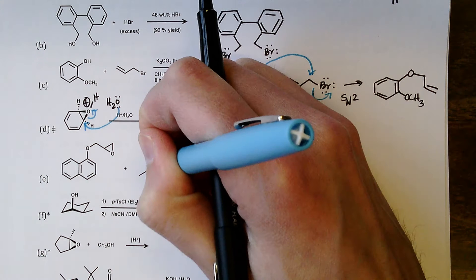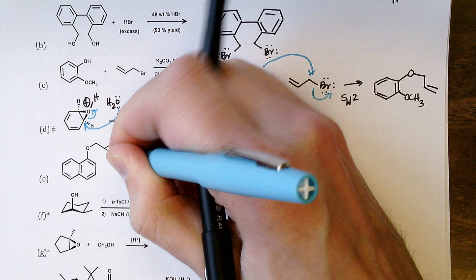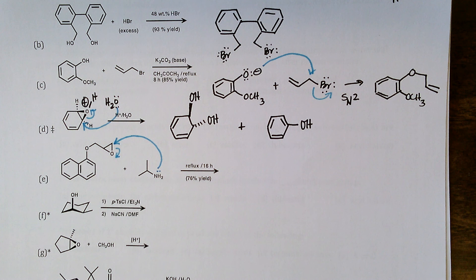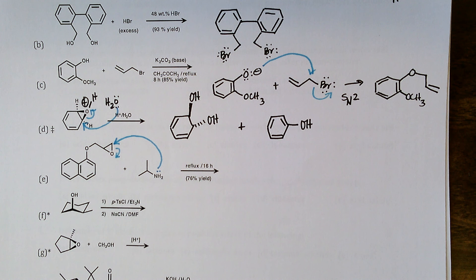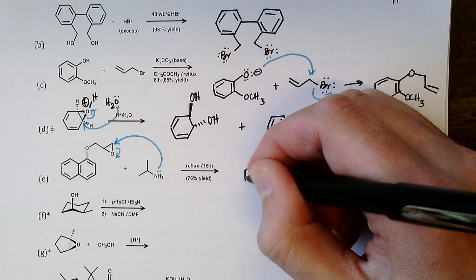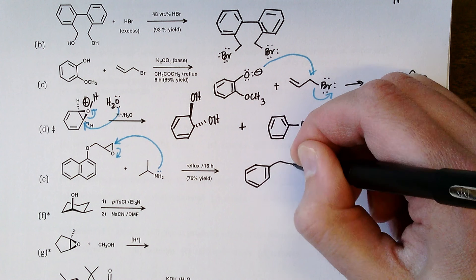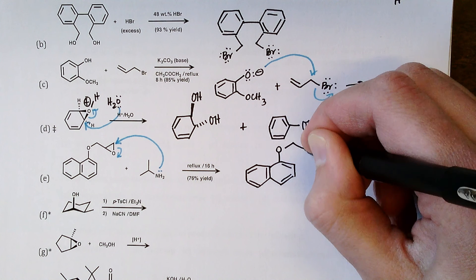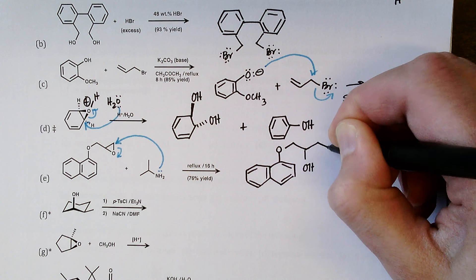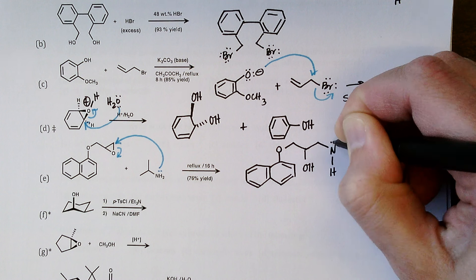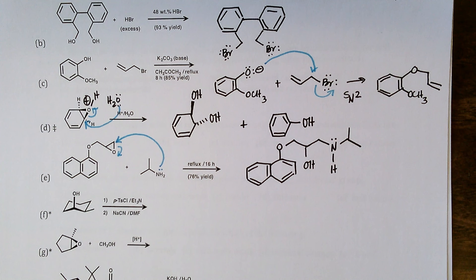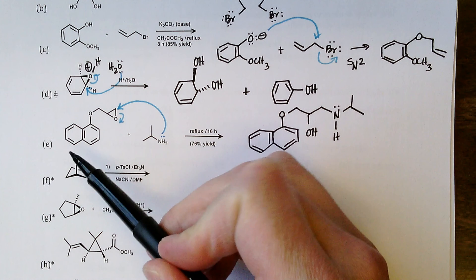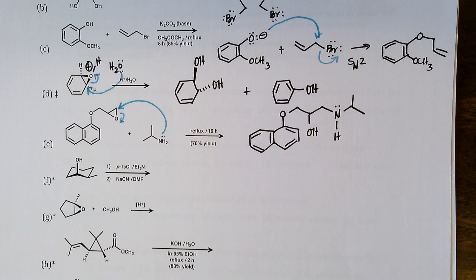Part e: a primary amine attacks the less sterically hindered carbon of the epoxide. Neutral and negatively charged nucleophiles attack the less sterically hindered carbon; under acidic conditions, the nucleophile attacks the more substituted carbon (better able to support positive charge). Here the neutral nucleophile attacks the less hindered carbon — the epoxide springs open, and after a rapid proton transfer event, you get the beta-amino alcohol. This is highly relevant to beta-blocker medications.